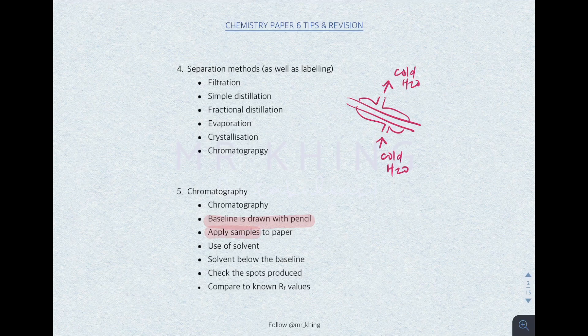Then, followed by the addition of solvent. The solvent can be an organic solvent like ethanol, or H₂O — water. You have to make sure that the solvent is below the baseline. Then we check the spots produced, and lastly we compare with the known RF value. You also need to know how to draw chromatography — refer back to the topical revision video, chapter 2.